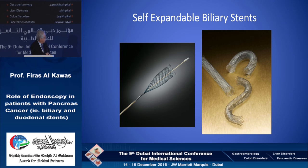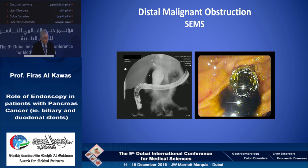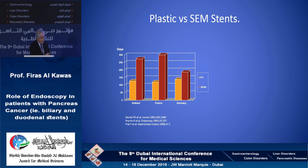The advantage is having a small-caliber introduction catheter that is later unsheathed, resulting in a fully expandable stent with a diameter of 10 mm — much larger than plastic stents. These stents are now available in uncovered, partially covered, or fully covered formats. They work very well in the bile duct, with significant improvement in drainage. Early European studies demonstrated much better longevity and patency duration compared to plastic stents.